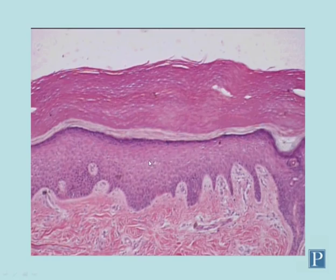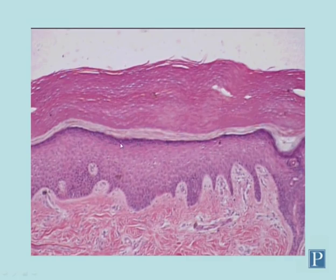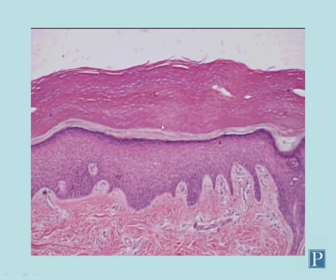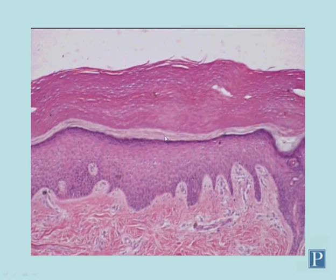Superficial to the stratum spinosum is the densely staining basophilic stratum granulosum, so called because of numerous granules in the cytoplasm of these cells. It's only a couple cell layers thick and marks the last layer of living cells in stratified keratinized epithelium — all cells above this layer are essentially dead. These cells produce glycoproteins that form a protective hydrophobic barrier, which also prevents nutrients from diffusing to sustain the cells above, which is partly why they die.